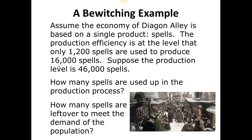We also have a production level of 46,000 spales. So we're producing 46,000, and we've got a couple of questions about the relationship between how much we use up to produce a certain amount. The first question is: how many spales are used up in the production process, given a rate of 1,200 spales per 16,000? The second question is: how many spales are left over to meet the demand of the population?